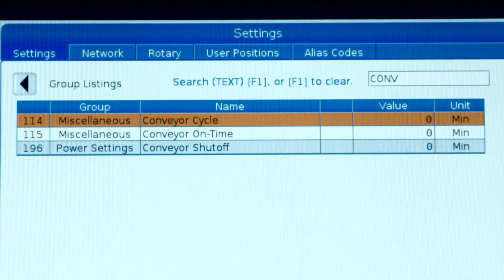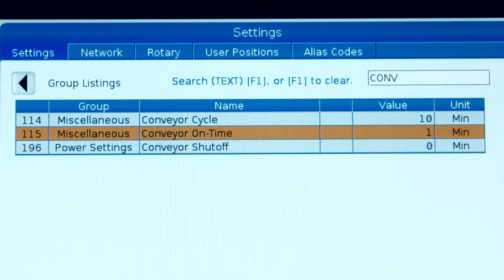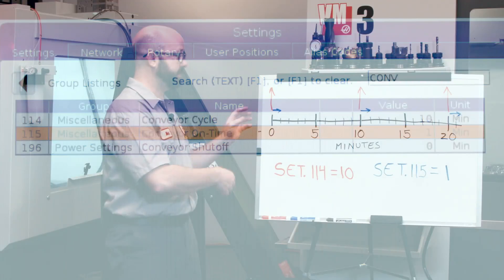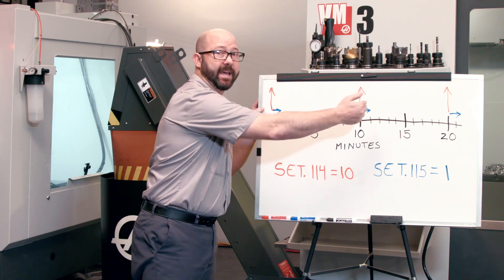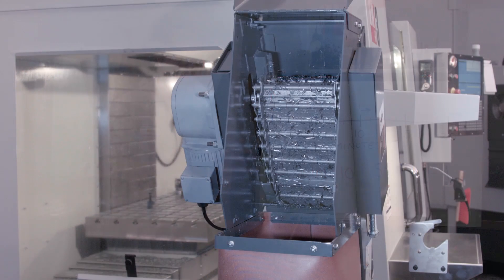So, if setting 114 is set to 10 and setting 115 is set to a one, then our conveyor is going to turn on for one minute every 10 minutes. It's going to run about 10% of the time. Now, this is a big deal. This is the point here.